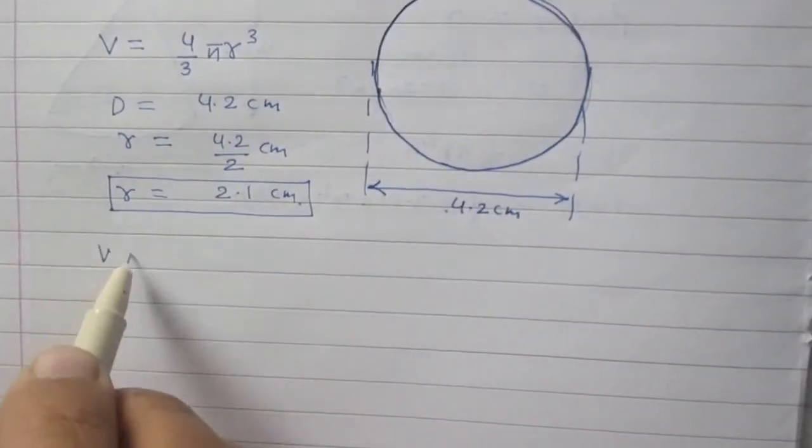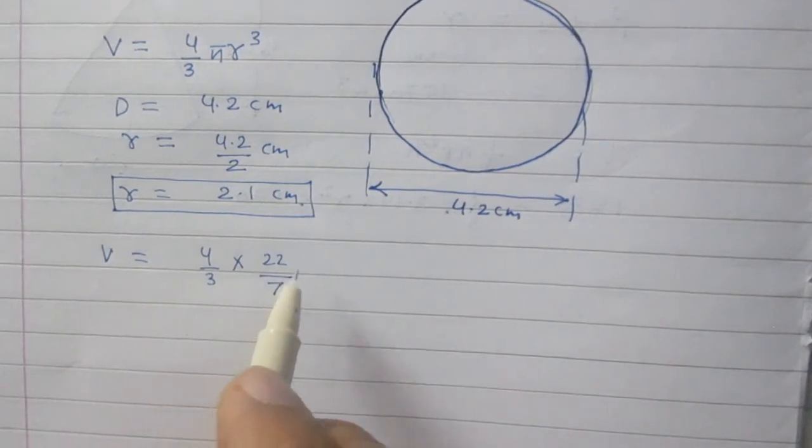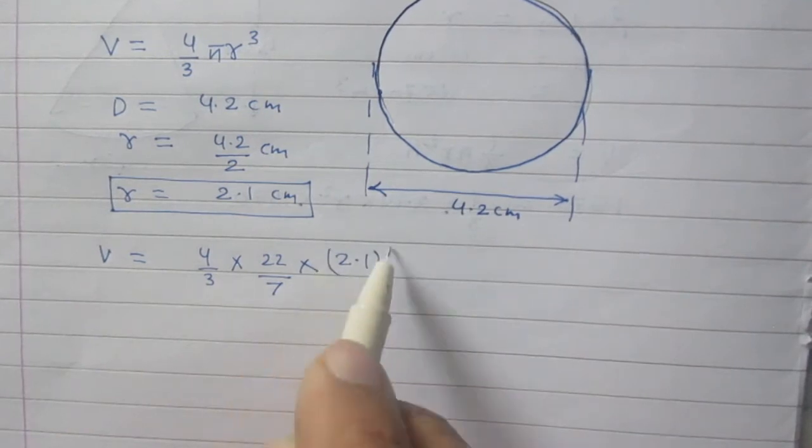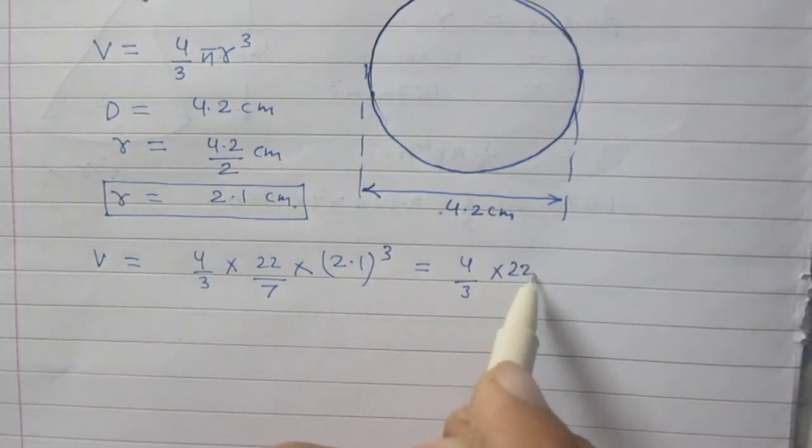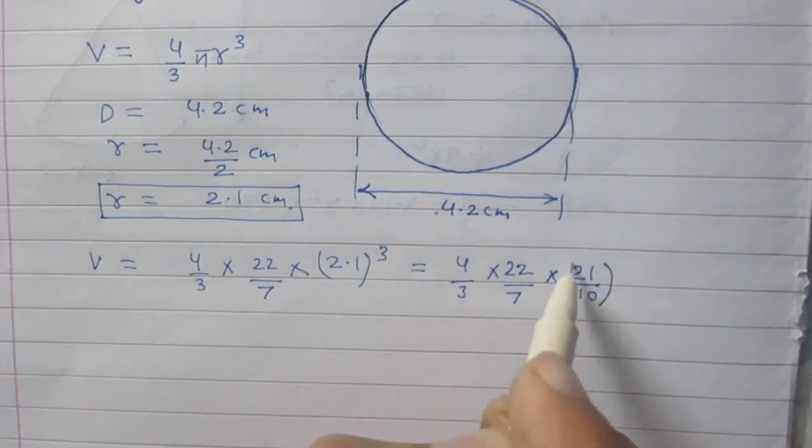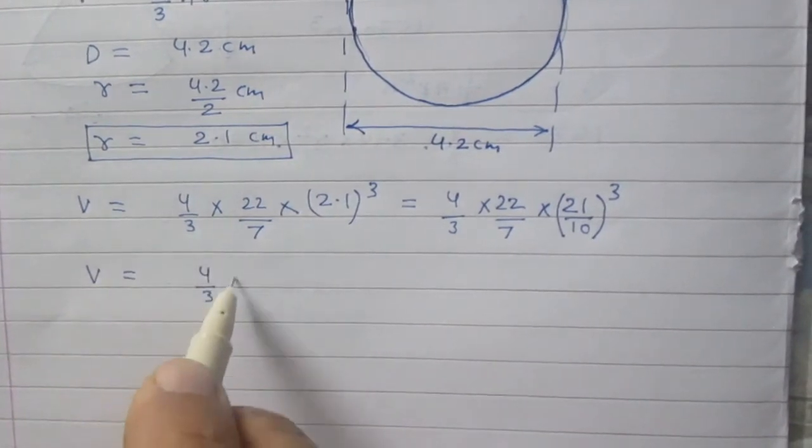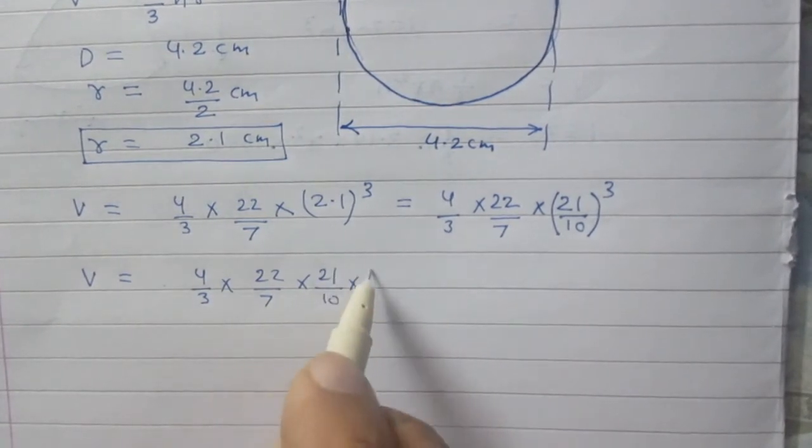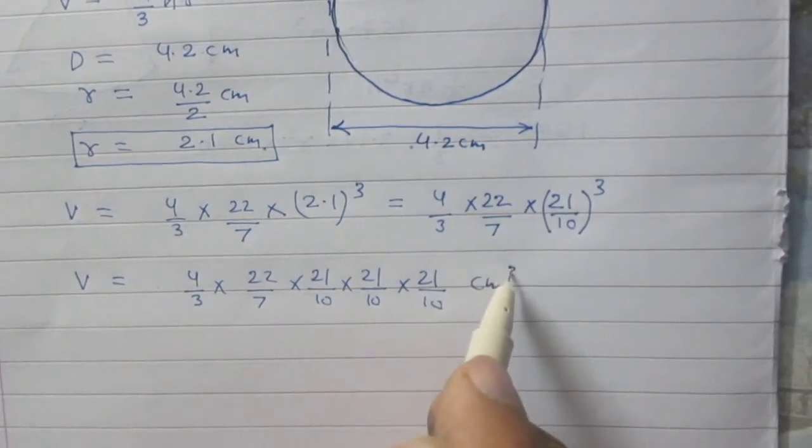And volume of this spherical ball is 4 by 3 pi which is 22 by 7. And r cube. It is 2.1 cube. So it is 4 by 3, 22 by 7, 21 upon 10. It is 2.1 actually cube. Or you can simplify it as 4 by 3, 22 by 7, 21 divided by 10. Then again 21 by 10 and then 21 by 10. It is in centimeter cube.